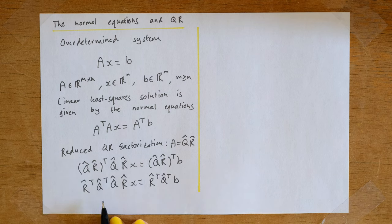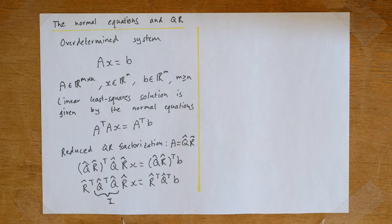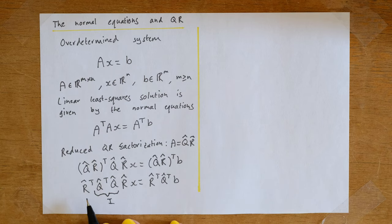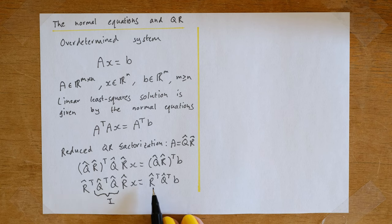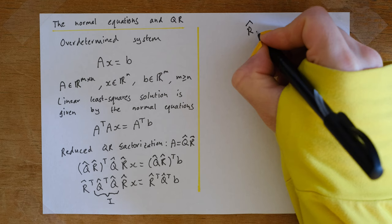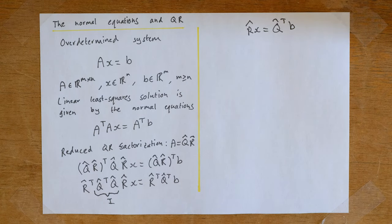Now there are two things we can do. First, since Q̂ has orthonormal columns, Q̂ᵀQ̂ equals the identity. Second, assuming A has full rank, R̂ is non-singular, so we can multiply both sides by R̂⁻ᵀ to remove those terms. We're therefore left with R̂x = Q̂ᵀb, which we can solve to find our linear least squares solution.